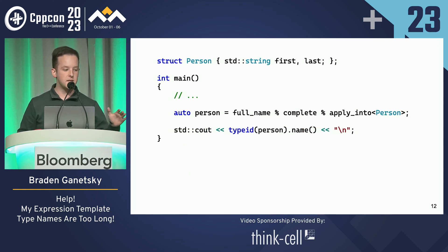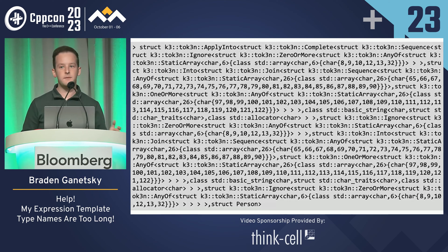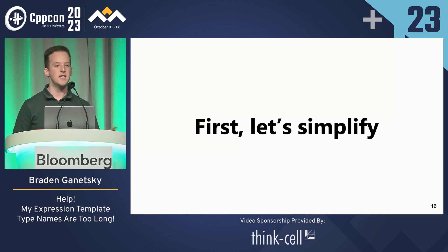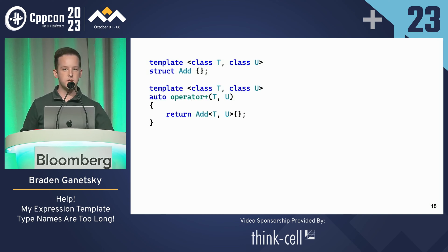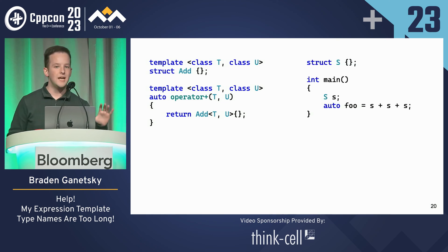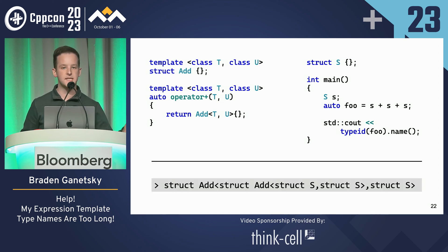But what is the type of the person parser? It's very long. With expression templates you can run into even longer things. Can we do better? Let's simplify first. Starting with a struct template called add and overloading operator plus to return an add, inside main I just use operator plus for three S's. Let's see what the type name is — on MSVC it looks like this. You can see the evaluation from left to right. This looks like it should just about work. How can we reduce this?